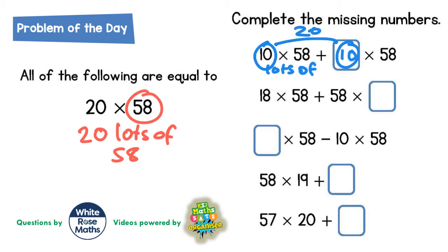The second one we've got 18 lots of 58. Well, we're trying to make 20 lots of 58, so we've got 18 lots already. We need another 2 lots of 58 because 18 plus 2 lots of 58 makes 20 lots of 58.